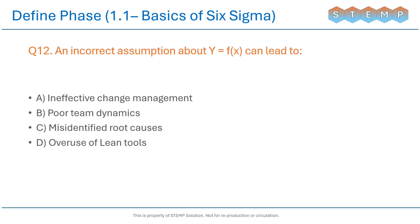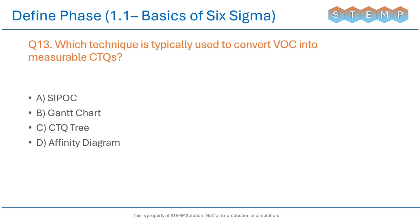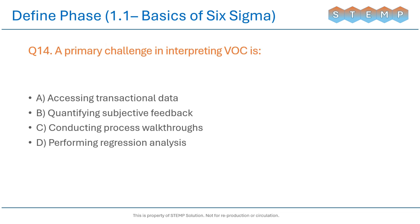Question 12: An incorrect assumption about y = f(x) can lead to? Question 13: Which technique is typically used to convert VOC into measurable CTQs? Question 14: A primary challenge in interpreting VOC is?